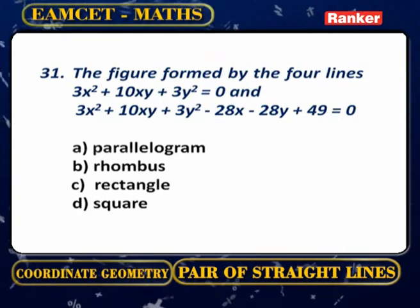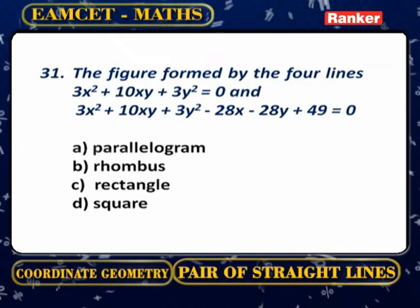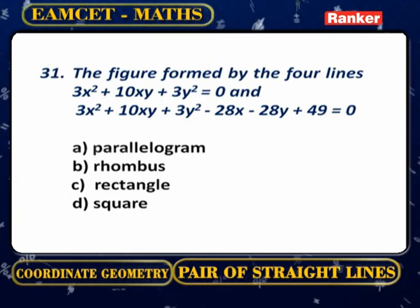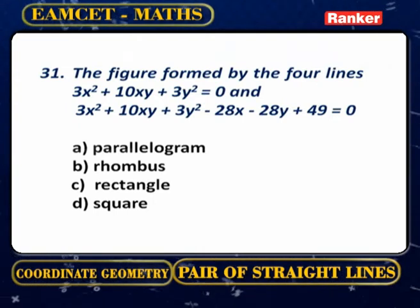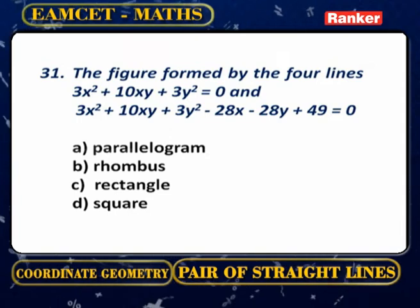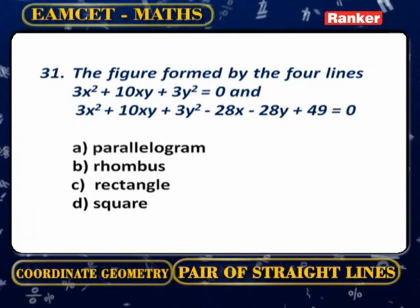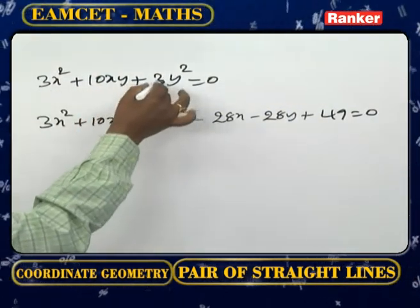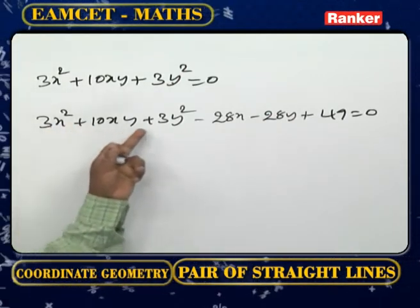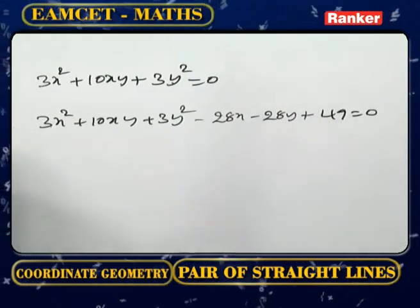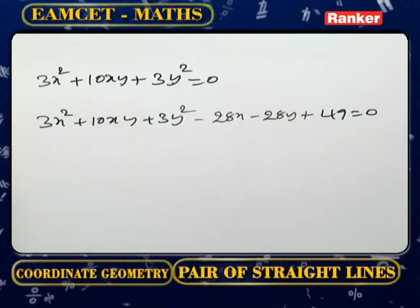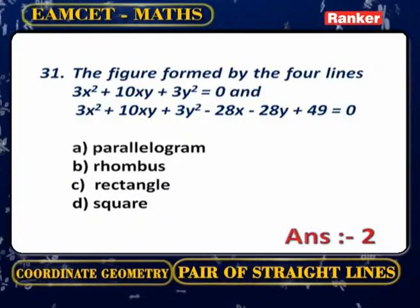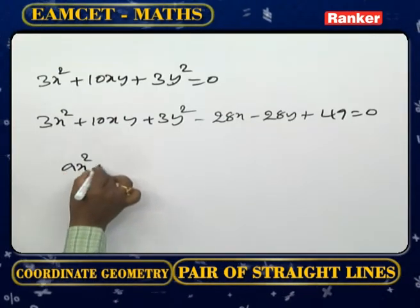The figure formed by the four lines 3x² + 10xy + 3y² = 0 and 3x² + 10xy + 3y² − 28x − 28y + 49 = 0. Since second-degree terms are the same in both equations, the pairs are parallel to each other. The first pair passes through the origin, the second does not. Now A + B = 3 + 3 = 6, which is not equal to 0.